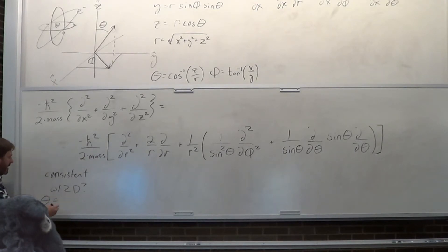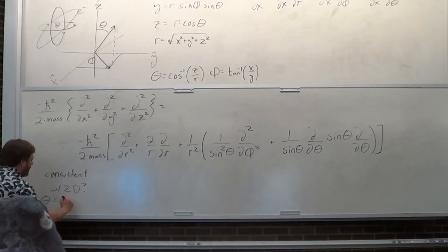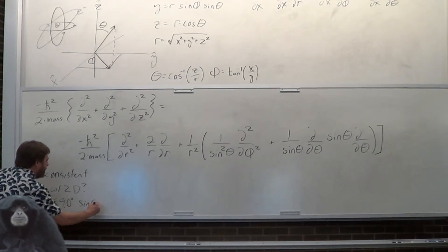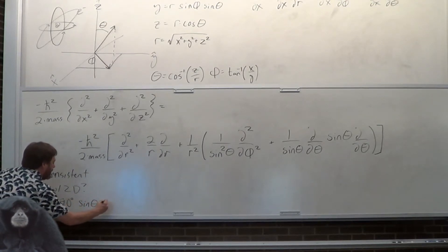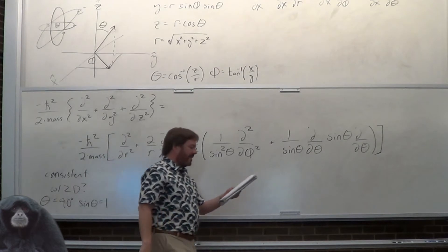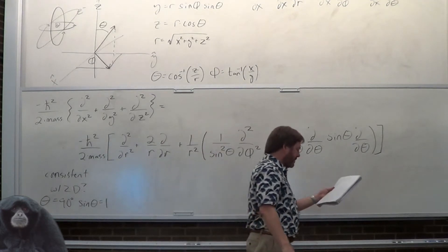For the 2D case, theta is 90 degrees. And of course, you see all those sine terms — the sine of 90 degrees is 1.